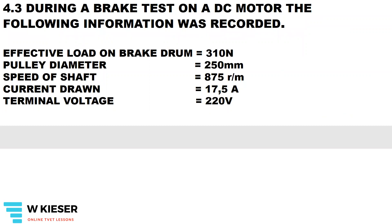During a brake test on a DC motor, the following information was recorded. This is the direct method using a rope brake test. The effective load on the brake drum is 310 newtons, which is the difference between the force of the weight and the force of the spring. The pulley diameter is 250 millimeters — divide by 1000 to convert to meters, and divide by 2 to convert diameter to radius. The speed of the shaft is 875 revs per minute, supply current 17.5 A, and supply voltage 220 V.